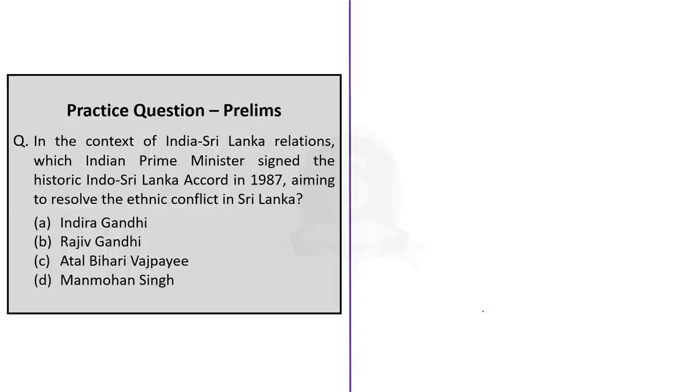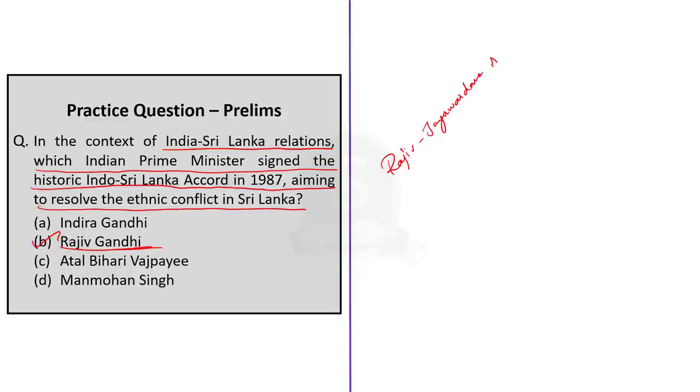Q2. In the context of India-Sri Lanka relations, which Indian Prime Minister signed the historic Indo-Sri Lanka Accord in 1987 aiming to resolve the ethnic conflict in Sri Lanka? The correct answer is option B, Rajiv Gandhi. The Indo-Sri Lanka Accord, also known as Rajiv Jayewardene Accord, was signed on July 29, 1987. The Accord aimed to address the ethnic conflict in Sri Lanka and provide a framework resolution of the long-standing issues between the Sinhalese and Tamil communities.